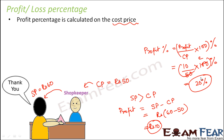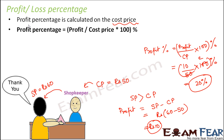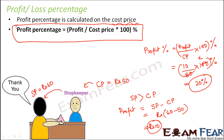Profit percentage is always calculated as profit divided by cost price into 100%. Similarly, loss percentage is calculated as loss divided by cost price into 100%. The reason cost price appears in this formula is that profit or loss percentage is always on the cost price. So if the shopkeeper is making a 20% profit, that 20% is on the cost price.